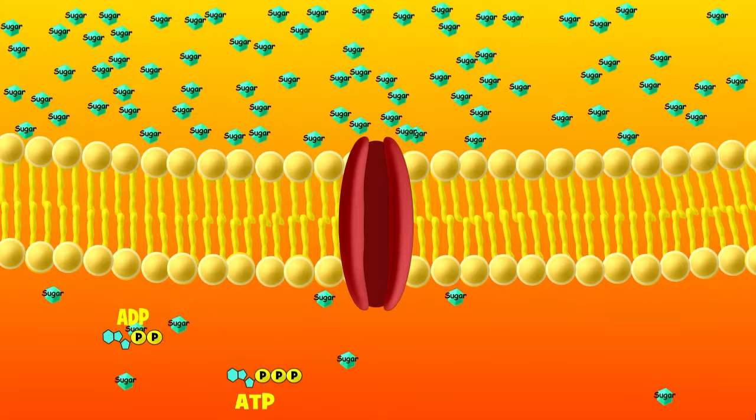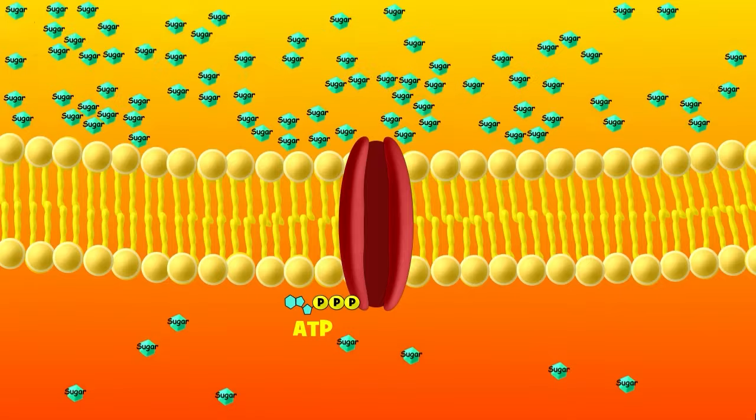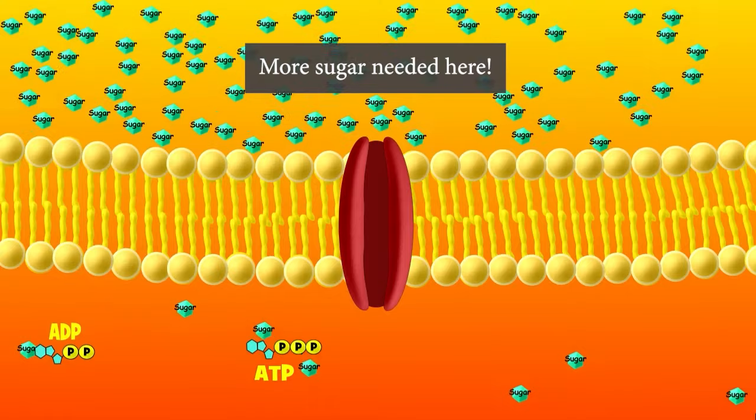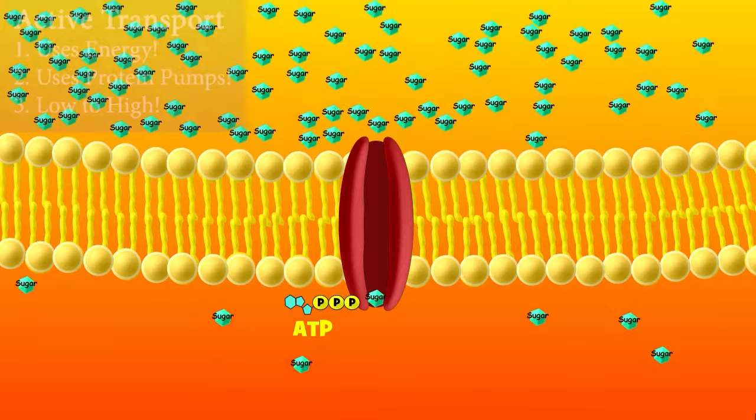In our sugar example, for instance, you might need to pull more sugar into the cell even if the environment has a lower concentration. In this situation, your cell would use active transport.